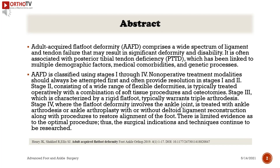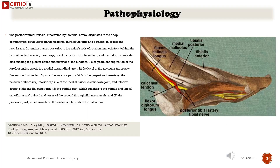Along with procedures to restore alignment of the foot, there is limited evidence as to the optimal procedure, thus the surgical indications and techniques continue to be researched. The posterior tibial muscle, innervated by the tibial nerve, originates in the deep compartment of the leg from the proximal third of the tibia and adjacent interosseous membrane. Its tendon passes posterior to the ankle's axis of rotation, immediately behind the medial malleolus in a groove supported by the flexor retinaculum.